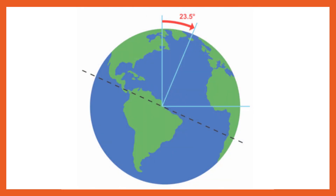Students, when the earth rotates, it's not exactly upright. In fact, it's tilted at an angle of 23.5 degrees, as you can see in the image. And if we draw an imaginary line in that tilted direction, then this imaginary line is called the axis of the earth. The tilting of the earth on its axis causes varying lengths of day and night.